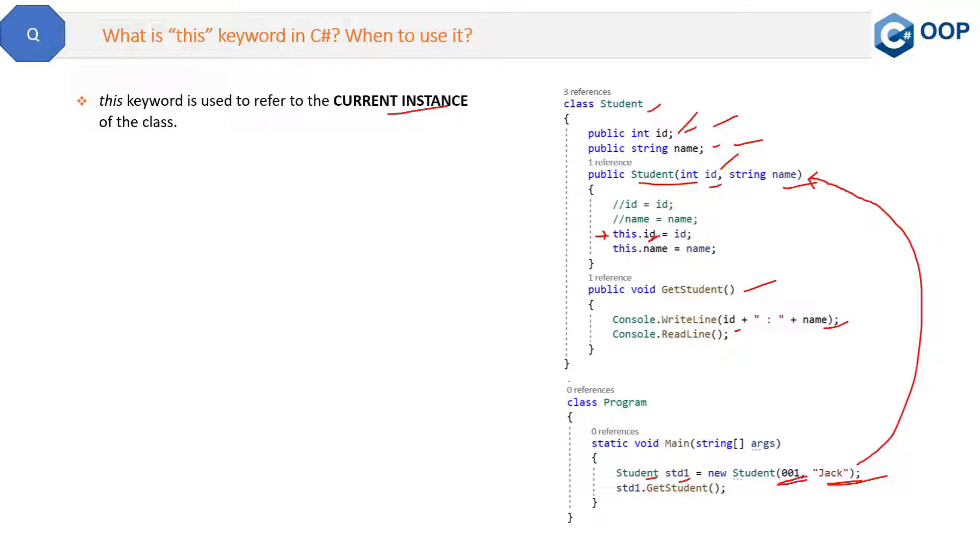That's why we can refer them by using the 'this' keyword. So that is the purpose of the 'this' keyword. In short, this.id and this.name will refer to the fields, and without the 'this' keyword, just id and name will refer to the parameters.